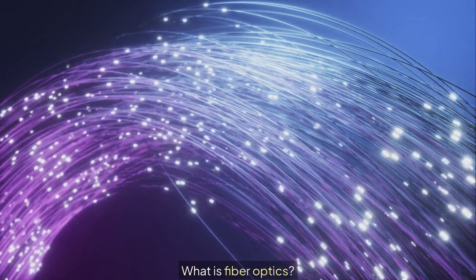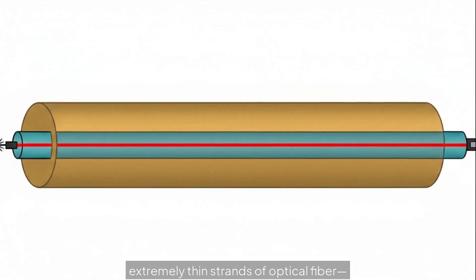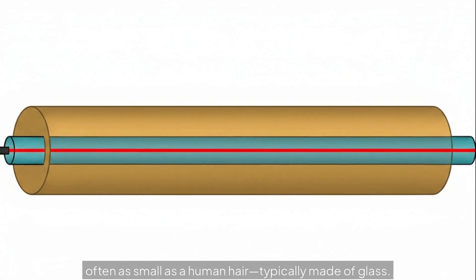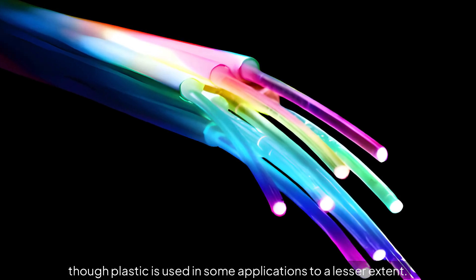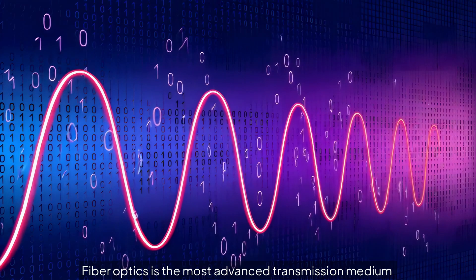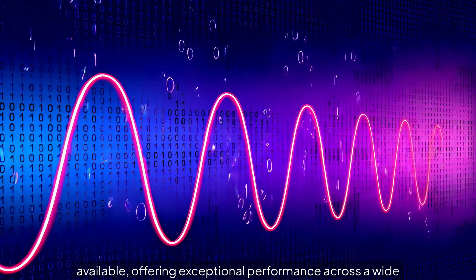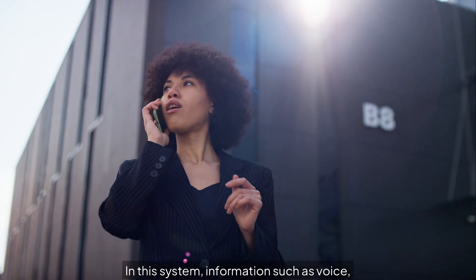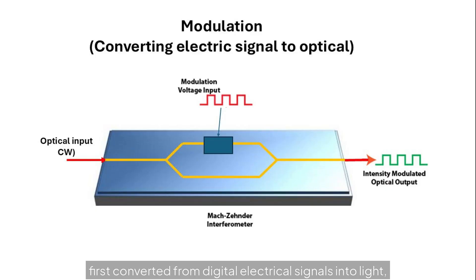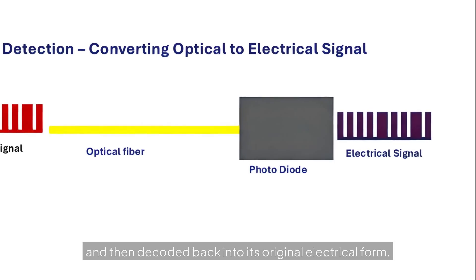Fiber optics is a technology that transmits signals through extremely thin strands of optical fiber, often as small as a human hair, typically made of glass, though plastic is used in some applications to a lesser extent. Fiber optics is the most advanced transmission medium available, offering exceptional performance across a wide range of applications. In this system, information such as voice, video, or data is first converted from digital electrical signals into light, transmitted over long distances, and then decoded back into its original electrical form.